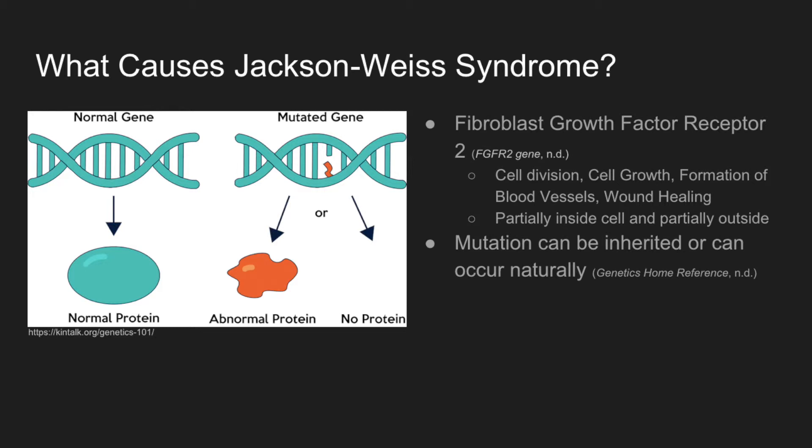Because the gene is partially inside of the cell and partially outside, it transmits information between cells. The problem occurs when the mutation causes the cell to transmit information telling other cells to become bone before they're ready to become bone. This is the factor within the syndrome that causes the skull to become malformed. The mutation can be inherited from a parent, or can occur naturally, depending on the circumstances.